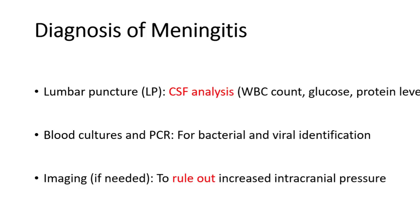Diagnosing meningitis requires prompt evaluation, with the key diagnostic test being a lumbar puncture or spinal tap to analyze the CSF. In bacterial meningitis, the CSF typically shows a high WBC count, elevated protein levels, and low glucose levels. Viral meningitis, on the other hand, will show an increase in WBC but glucose levels are typically normal. Blood cultures also help identify the causative organism, especially in bacterial cases. PCR is an important diagnostic tool for viral meningitis, allowing rapid detection of viral genetic material. Brain imaging, like a CT or MRI scan, may be performed in certain cases to rule out increased intracranial pressure or other complications before performing a lumbar puncture.